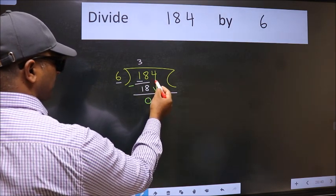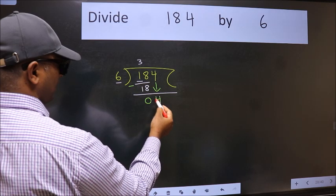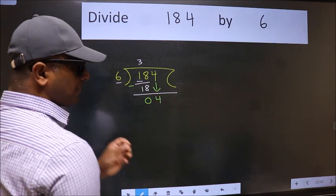After this, bring down the beside number. So 4 down. After this step, the mistake happens.